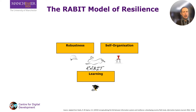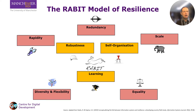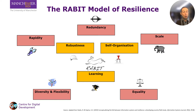Three are primary foundations of resilience: robustness, self-organisation, and learning. Five are secondary enablers of resilience: redundancy, rapidity, scale, diversity and flexibility, and equality. The stronger these are, the more resilient the system will be, and ICTs can both strengthen or weaken these attributes.